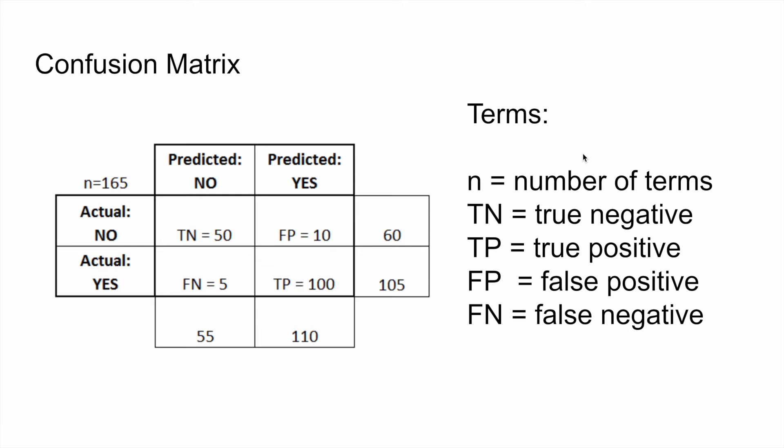Now, a confusion matrix is actually used to evaluate classification models, including linear regression. Now, a confusion matrix is a table, as seen below, that organizes the results of the model into four main compartments. Let's take the example of multiple sclerosis disease detection, since that is what we are going to be using or exploring in our project.